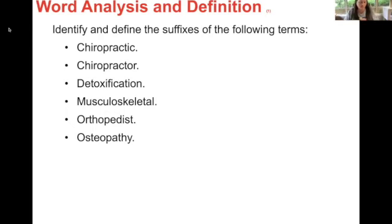Word analysis and definition: identify and define the suffixes. Chiropractic — the -ic means pertaining to. Chiropractor — -or is the person who's doing it. They both share the root chiropractic. Detoxification — -fication means remove. Musculoskeletal — -al means pertaining to. Orthopedist — -ist makes it a specialist, like optometrist or podiatrist. Osteopathy — -pathy means disease. Anytime you see -pathy, it has to do with disease.